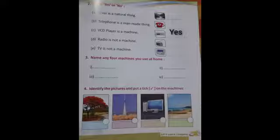Read the next sentence: telephone is a man-made thing. Telephone is not a natural thing, it is made by man. So telephone is a man-made thing, yes. Next sentence: VCD player is a machine. Yes, VCD player is a machine. It is used to see movies, listening songs, etc. So you will write yes.